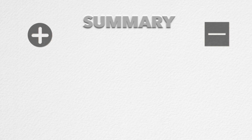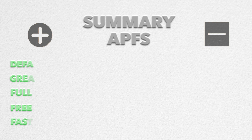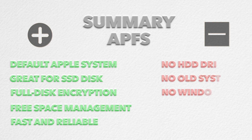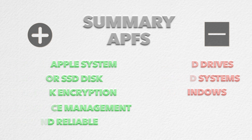Now let's sum it all up with the pluses and disadvantages of the different systems. Starting with APFS: it's the default Apple system, great for SSD storage, allows full disk encryption, and is efficient at managing free storage — it's fast and reliable. But if you are using it with hard disk drives, it doesn't have much advantage, and it actually has worse compatibility with older disks and systems. And of course it's not compatible with Windows computers.